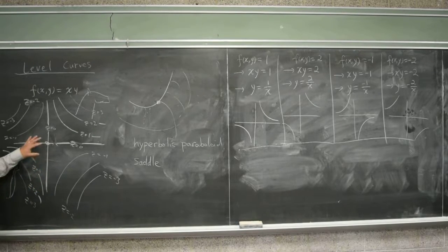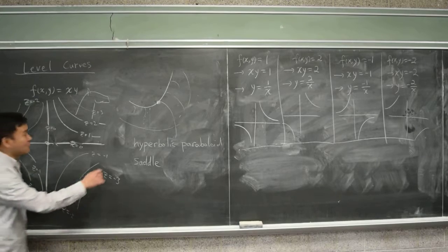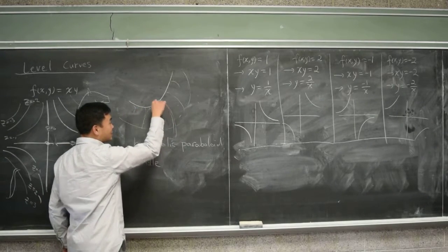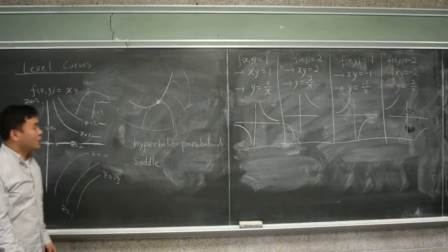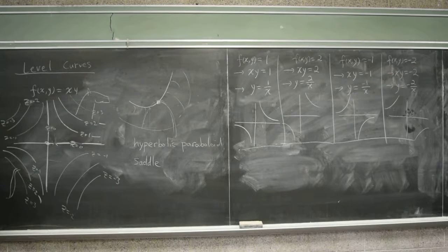And because on one side, it's like a maximum. If you view it... On this side, it's like a maximum. Whereas if you view it this way, it's like a minimum. And therefore, such a point is called the saddle point.